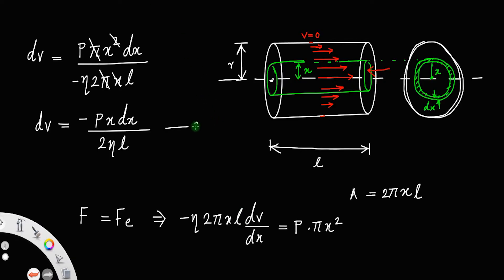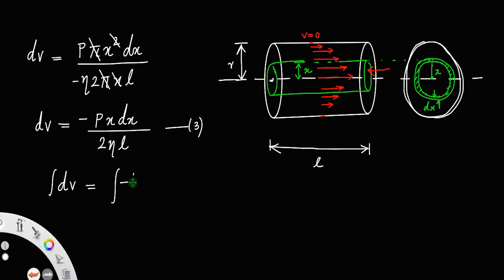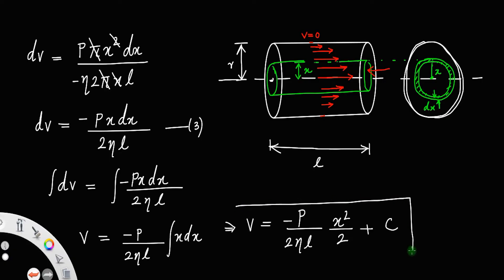To get the total velocity, we integrate equation 3. Integrating both sides: ∫dV = −(P/2ηL)·∫x dx, which gives v = −(P/2ηL)·(x²/2) + C, that is v = −(Px²)/(4ηL) + C. Let us call this equation 4.